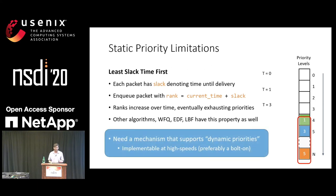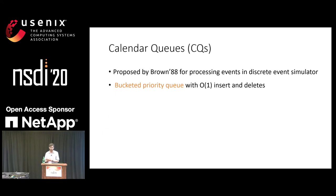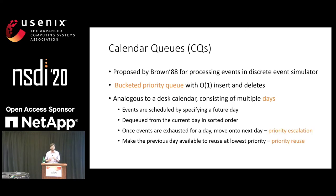What we need is a mechanism that supports dynamic priorities — periodic escalation of priorities of packets already in the buffer — and ideally implementable in high-speed switches today. An old abstraction called calendar queues seems a good fit for this. It was proposed in the late 1980s for processing events in a discrete event simulator, and it is essentially a bucketed priority queue with constant time inserts and deletes for common distributions. You can think of it like a desk calendar which consists of multiple days.